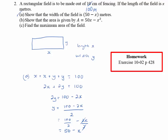Part (b) asks us to show the area is given by A equals 50x minus x squared. Area of a rectangle is length times breadth. The length is x and the breadth is y, which we know is 50 minus x. Expanding the brackets: x times 50 is 50x, minus x times x is x squared. So A equals 50x minus x squared.